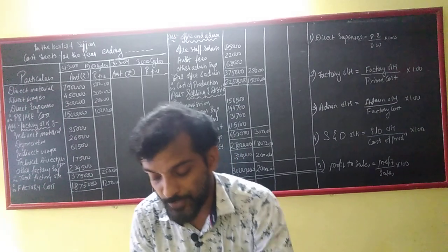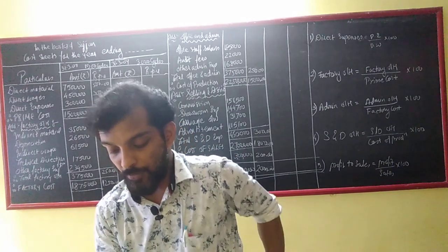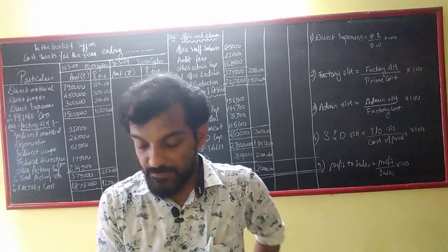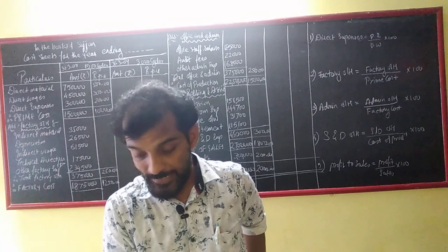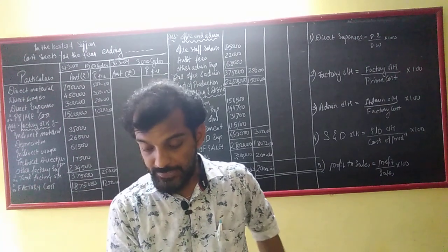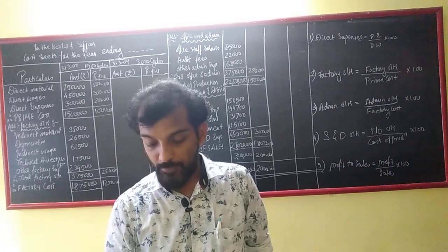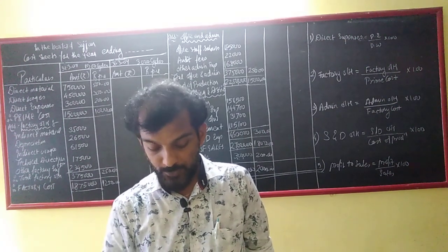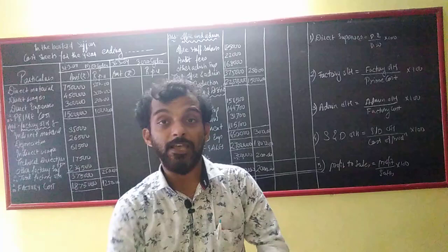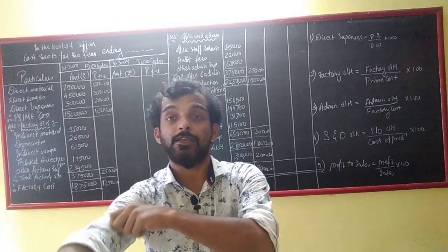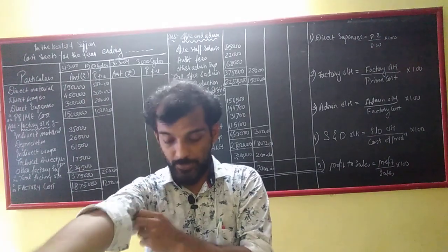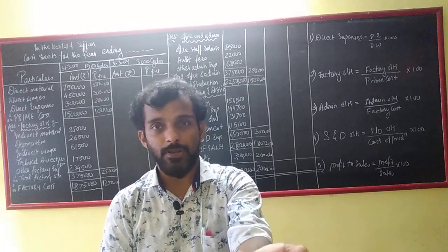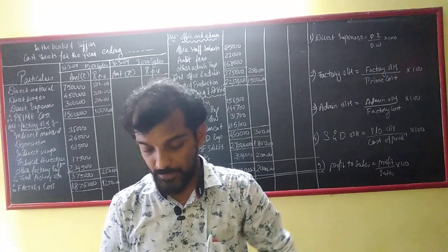So, question number 6. The following information for the year ending 31st March 2008 is taken from the books of Sajjan Company, which manufactures cycles. Direct material consumed — this goes to Prime Cost.